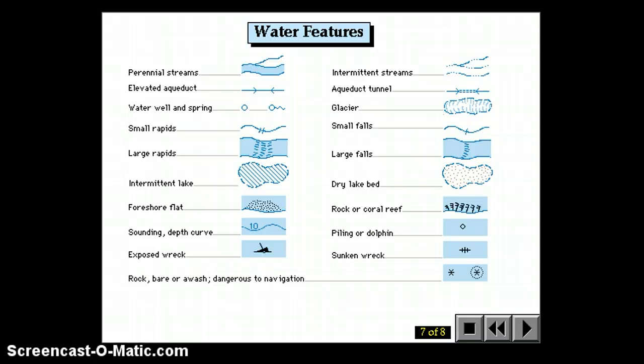Water features are all in blue. If it's a stream that's always around, perennial, it'll be shaded in. If it's a dashed line, it's intermittent, meaning sometimes it's there, sometimes it's not. Some USGS maps show culverts, springs, wells, glaciers, rapids, waterfalls, coral reefs, shipwrecks. All of these things are shown on various topographic maps.